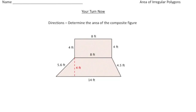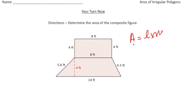Welcome back. Let's go over this practice problem. We have a shape that consists of a rectangle on the top and a trapezoid on the bottom. I'm going to find the area of the rectangle and then the area of the trapezoid and add them together. The area of the rectangle is length times width: eight times four gives us 32 square feet.